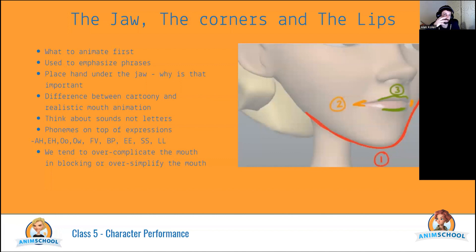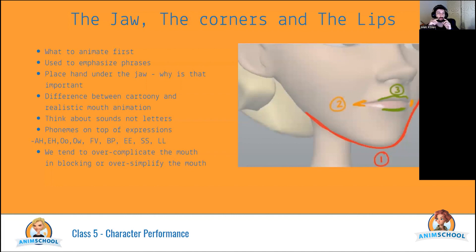We tend to over-complicate or oversimplify the mouth in the blocking pass. When you spline you'll see your mouth either swimming or deforming too much. If it's deforming too much, remove some shapes and identify the shape you want to stick to. For example with Rick, if you have too many blocked mouth shapes, your teeth might swim or lips deform too much — so remove some and focus on closing the jaw, moving the corners, moving the lips a little for a more consistent mouth.